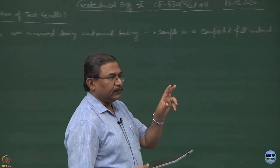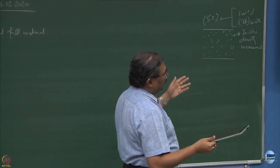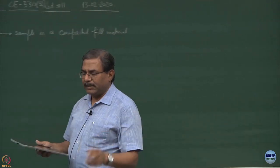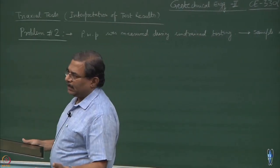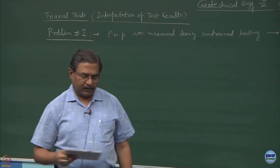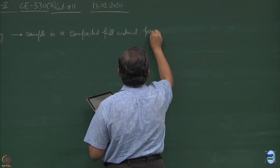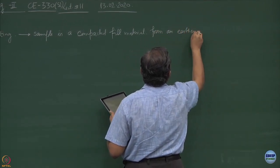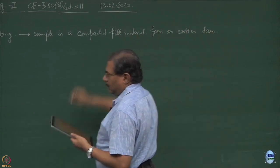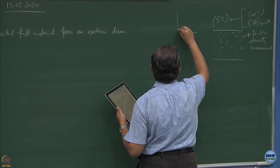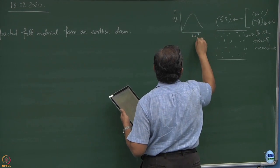These methods are normally used to check whether the fill has been compacted at the right in-situ density. We got gamma d only from here, gamma d in-situ. And then we obtain moisture content also from here.